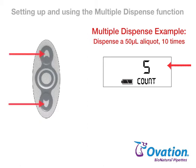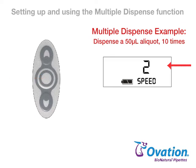Press and release the up or down arrow to change the number of dispenses. Then press and release the center button to lock in the new count setting and advance to the current speed setting.